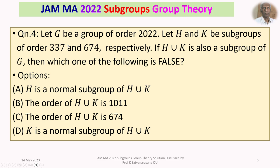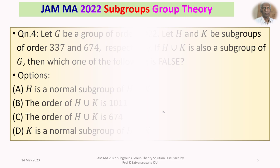We are given a group G of order 2022, and H and K are subgroups of orders 337 and 674 respectively. It is also given that H union K is a subgroup of G, and we must find which one of the four statements is false. Only one is false and the remaining three are true.